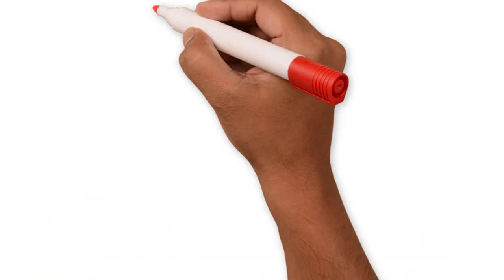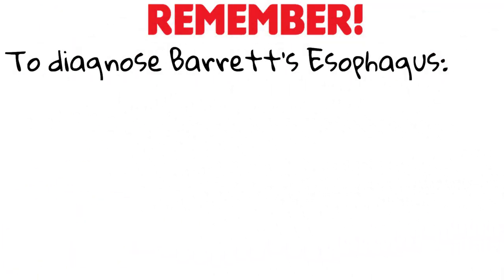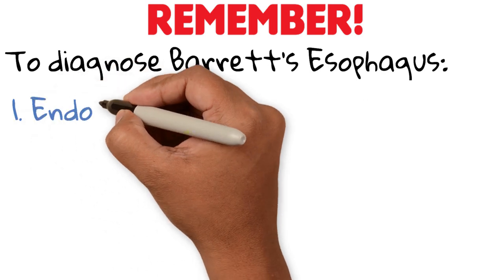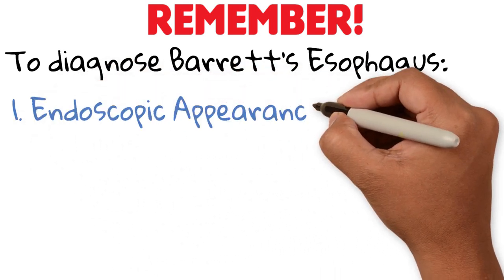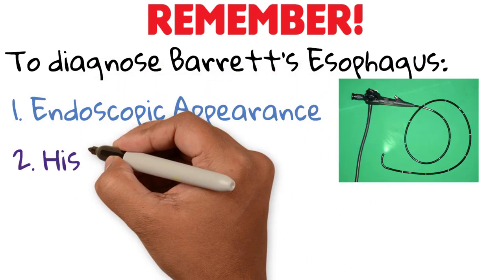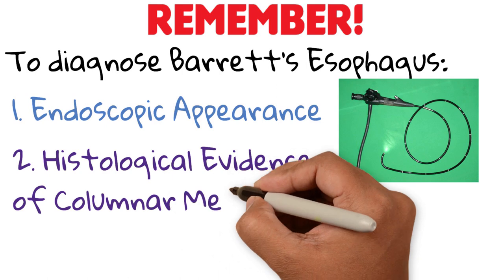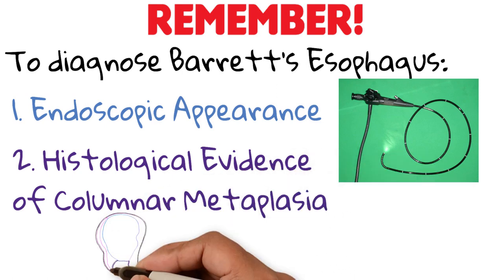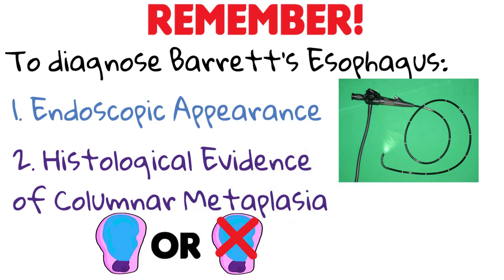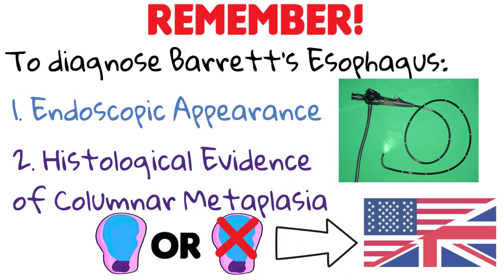So remember: to diagnose Barrett's esophagus you need, number one, the endoscopic appearance, and number two, the histological evidence of columnar metaplasia — with or without goblet cells, depending on which guidelines you follow.